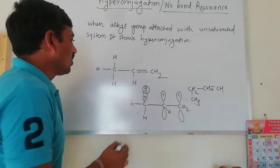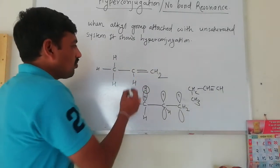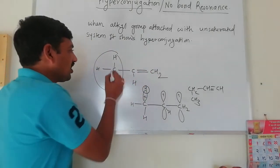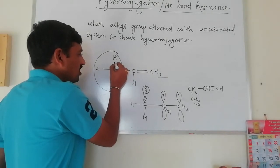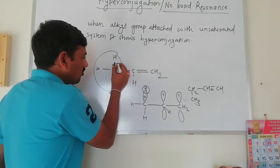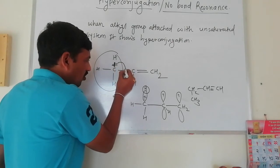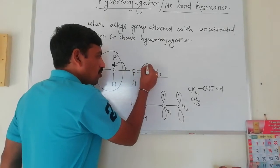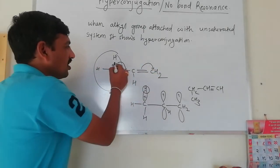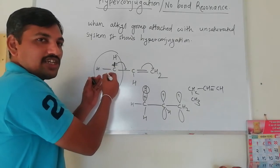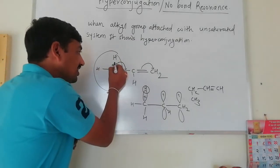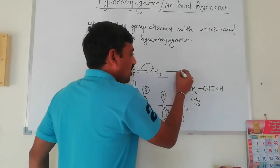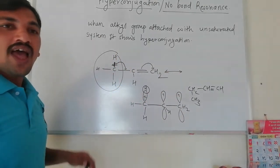Let's look at this example. Here is propene — propene has a double bond, and the double bond is directly attached to a methyl group. The methyl group has C-H bonds; each C-H bond has 2 electrons, so there are sigma bonds with 2 electrons each. When the double bond system carries a positive or negative charge, the sigma bond participates in the conjugation — this is the hyperconjugation.